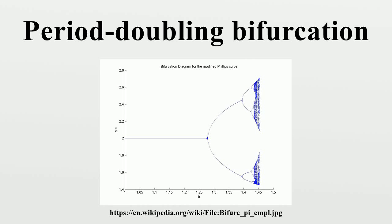In mathematics, a period-doubling bifurcation in a discrete dynamical system is a bifurcation in which a slight change in a parameter value in the system's equations leads to the system switching to a new behavior with twice the period of the original system.